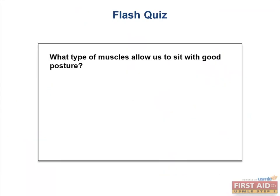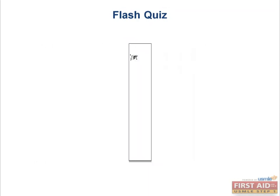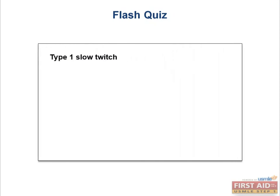Time for a flash quiz. What type of muscles allow us to sit with good posture? Type 1 slow twitch.